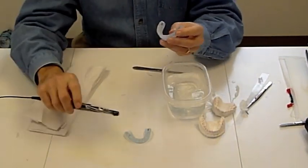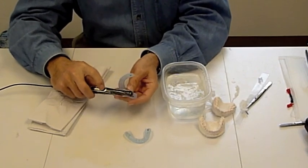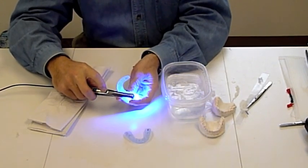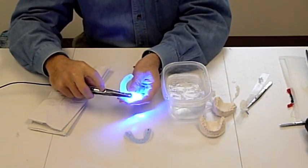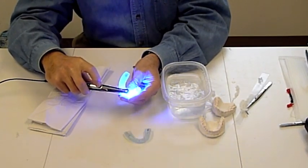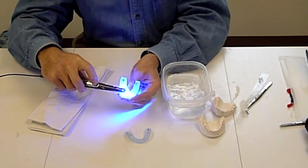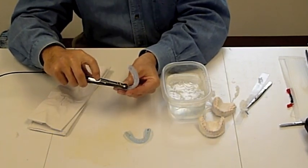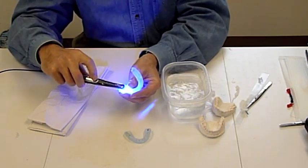It's important to go ahead and re-cure any metal brackets with the Velo light just to make sure that the plastic is cured. The ceramic brackets, because of their nature, the fact that they're clear, are going to cure all the way through when exposed to the Velo light.